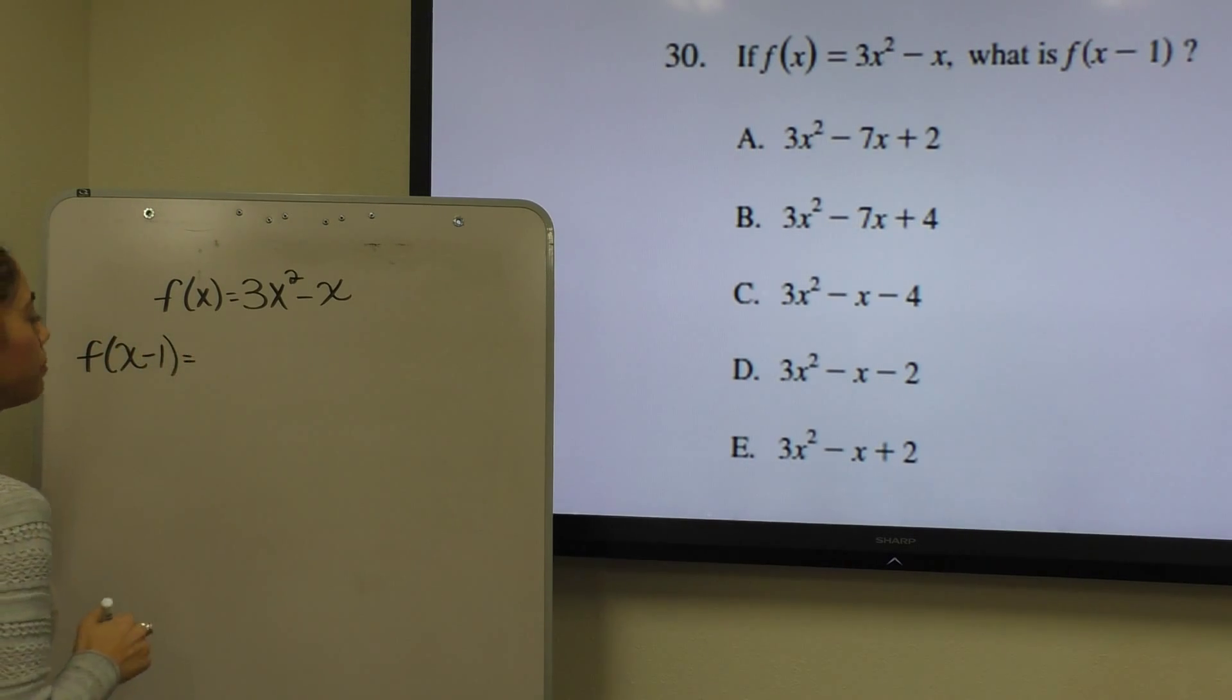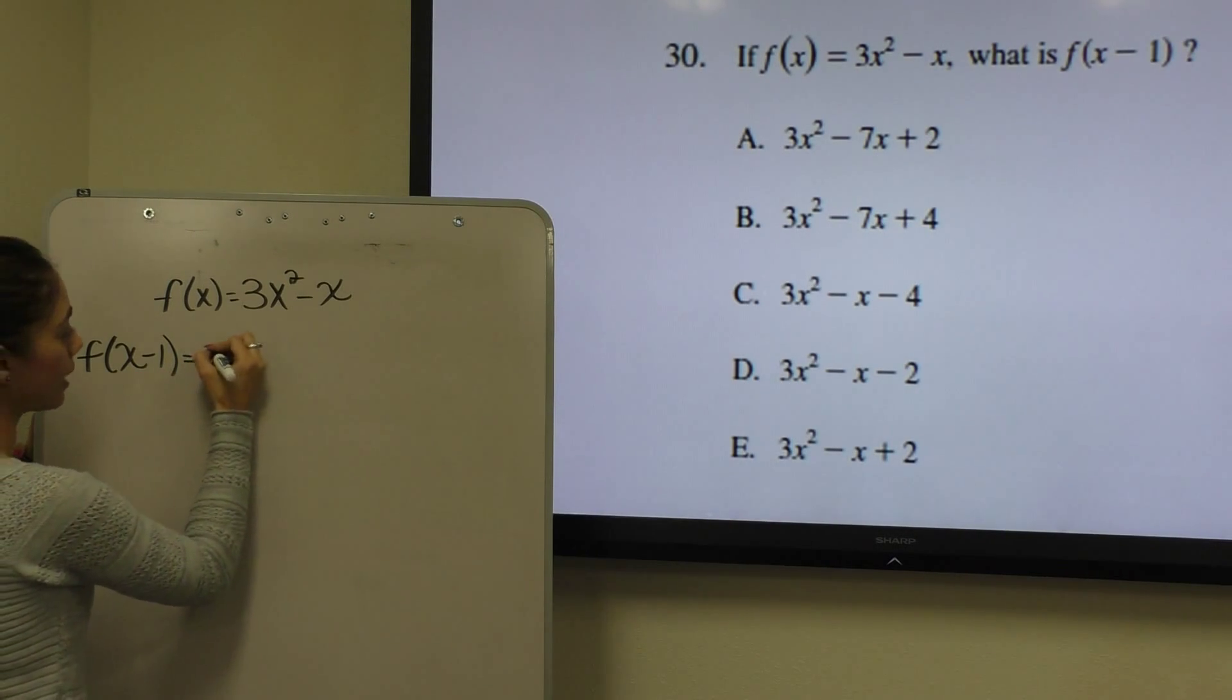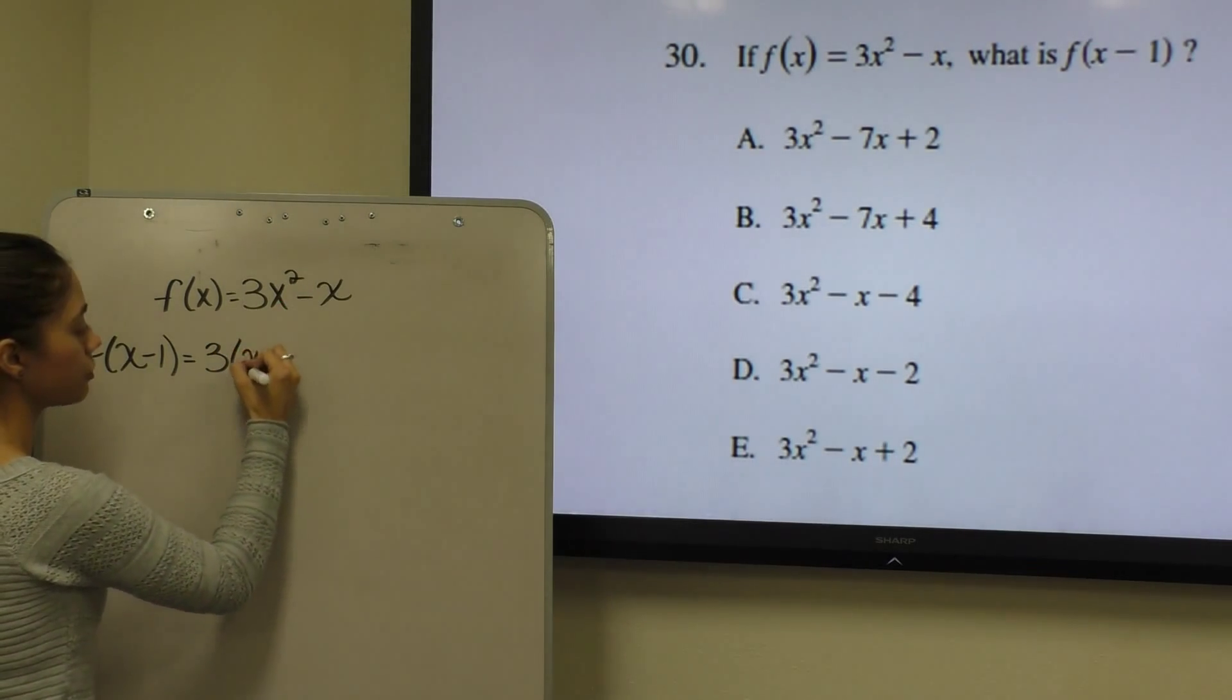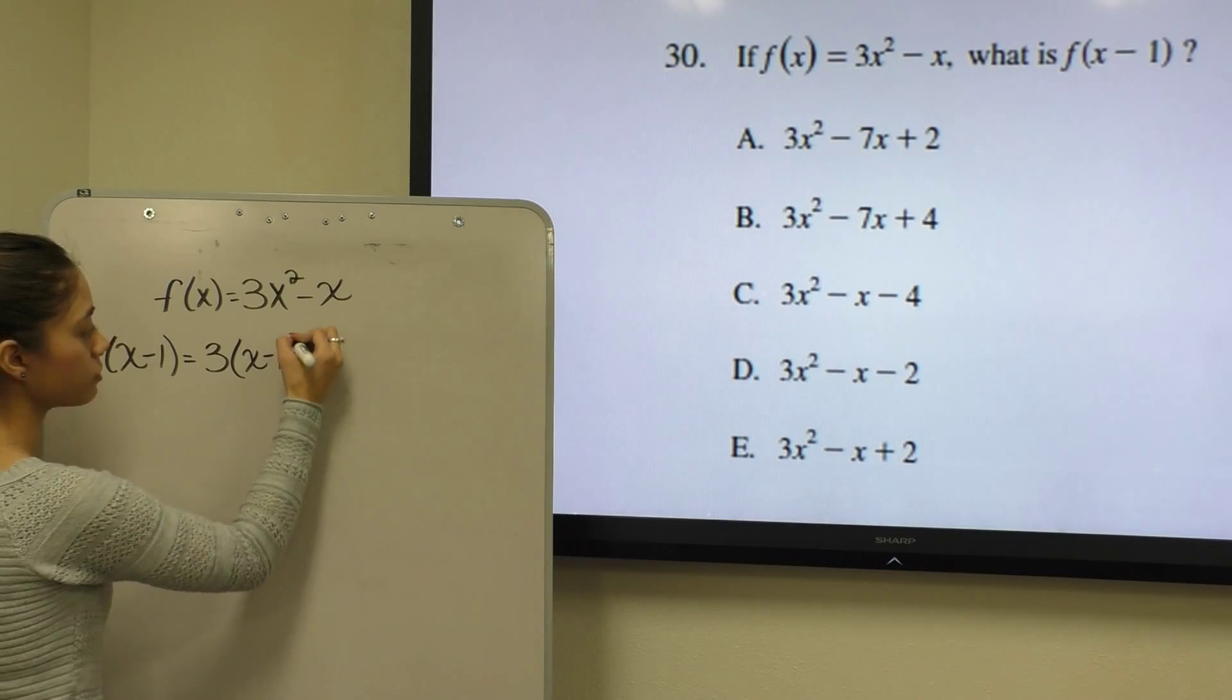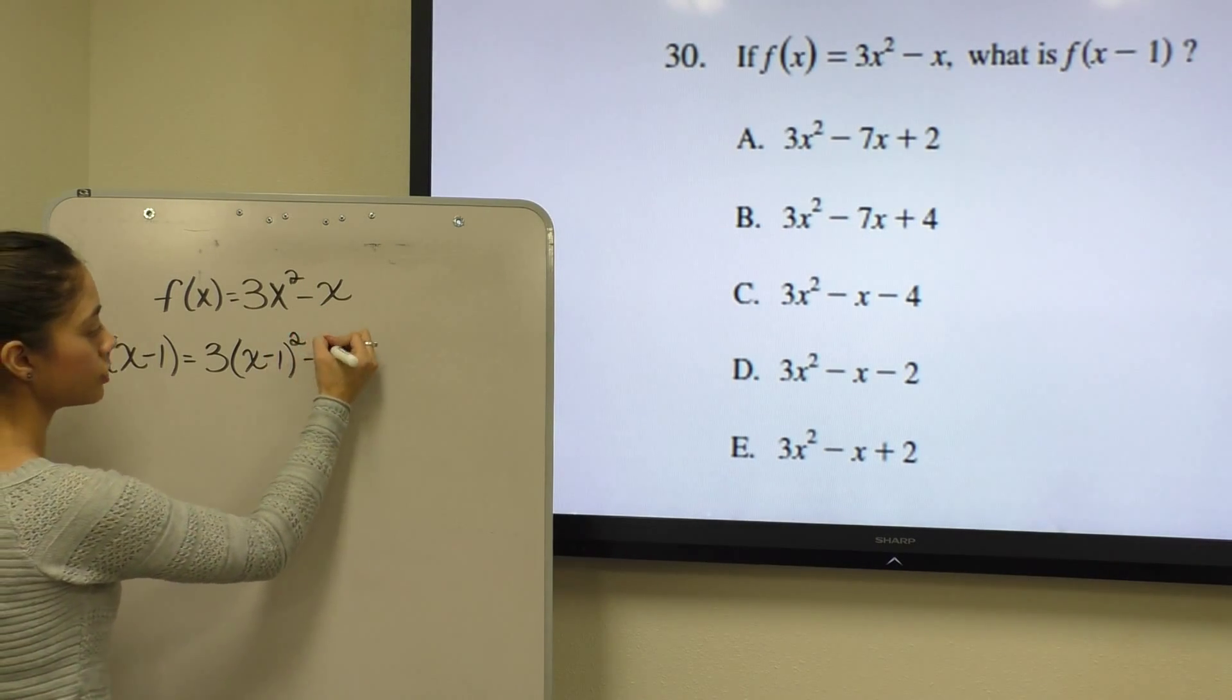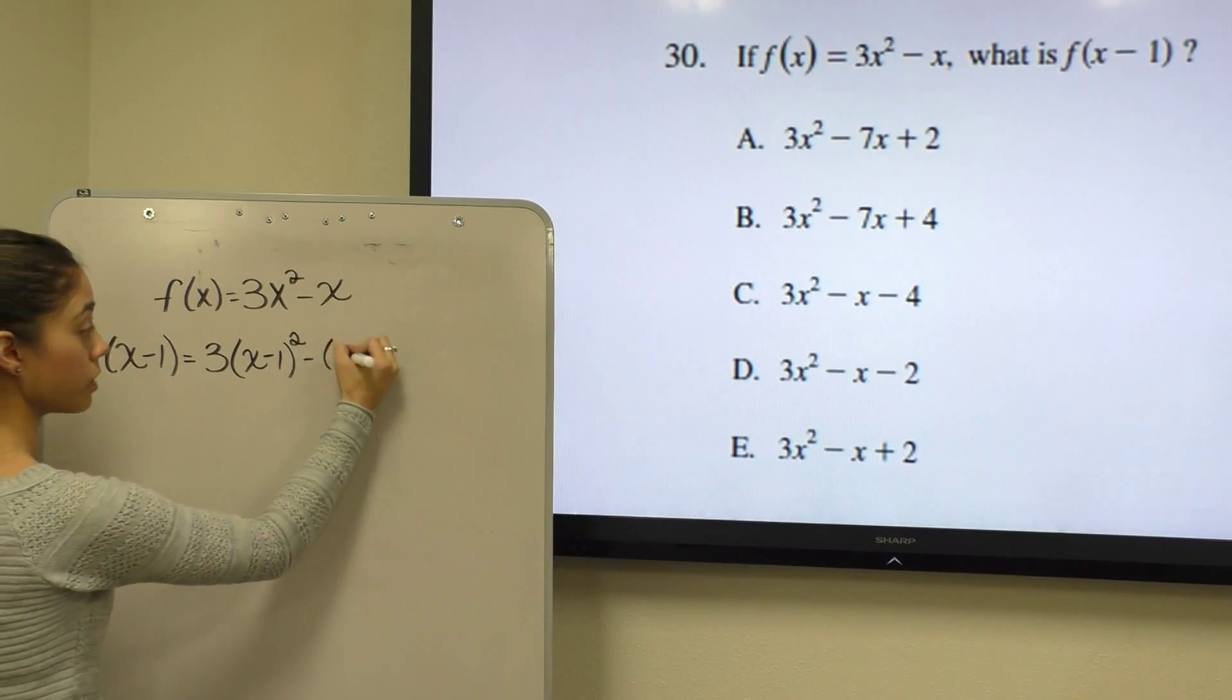So as I said before, you would plug in x minus 1 wherever you would have had an x prior to that. So we had an x here being squared, so we would replace that x with x minus 1 and square that amount. And we had an x here, so I would replace that x with x minus 1.